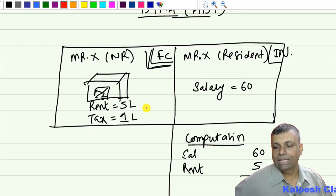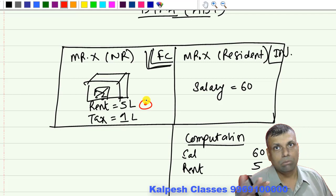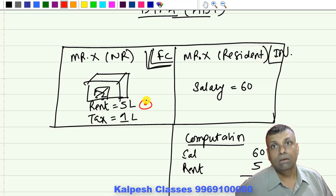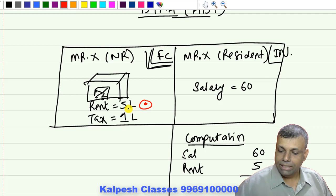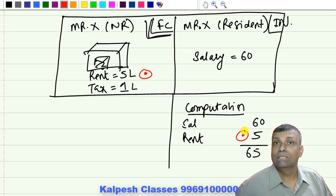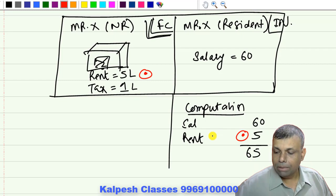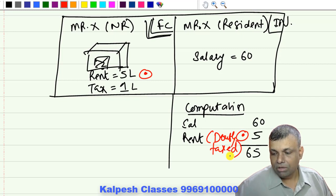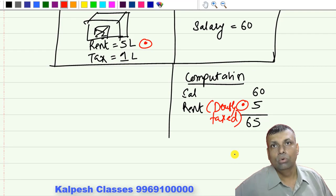This is the stage where double taxation has come into existence. These 5 lakhs of rental income are already included in that foreign country's tax computation and are taxed there. The same 5 lakhs of rent income is also included in India's taxation because of your residential status. So this particular income is doubly taxed - taxed in that country and also taxed in India. This is how double taxation comes into existence.